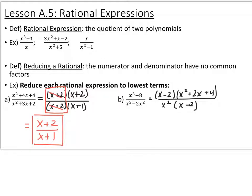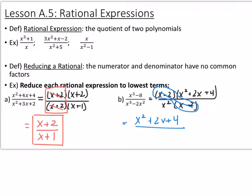For example b, the numerator is a difference of cubes, so it factors into x minus 2 times x squared plus 2x plus 4, where this back quadratic does not factor. In the denominator you can factor out an x squared and you're left with just an x minus 2. So again we have an x minus 2 over an x minus 2— x minus 2 divided by x minus 2 is 1, so we can cancel those off. You're left with x squared plus 2x plus 4 over x squared. There's no more simplification because the x squared in the numerator is attached with a plus, so you can't cancel it.